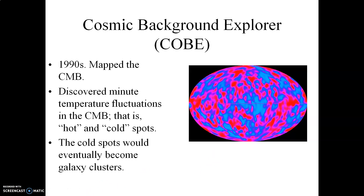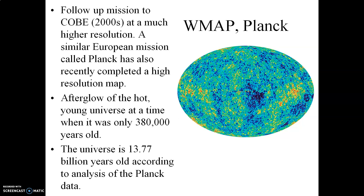A few years after COBE completed its mission back in the 1990s, there were a couple of follow-up missions that mapped these temperature fluctuations with much higher resolution and more detail, producing maps that look like this. There were two space probes launched after COBE — one by the United States called WMAP, and another by the Europeans called Planck. Both of these satellites mapped out in much higher resolution the temperature variations of the cosmic microwave background, with more detail in the cold spots and hot spots.